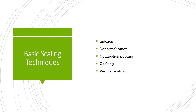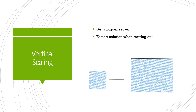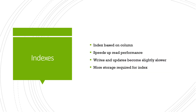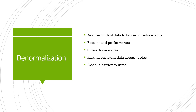These are the simplest ways to start improving database performance. The easiest is vertical scaling — you literally just move your database to a bigger server with a faster processor or more memory. You can also add indexes: you create an index based on a frequently accessed column, such as user ID, which speeds up read performance by avoiding full table scans. The downside is that writes and updates become slightly slower, because every time you update a row you may also have to modify the index, and you require more storage to store the index itself.